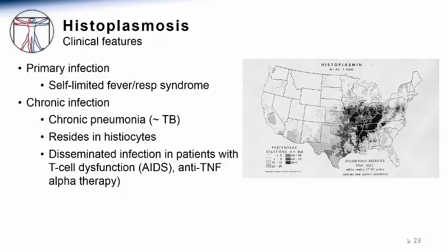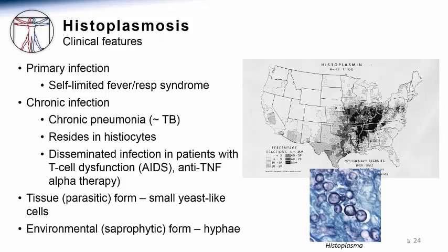Similar to tuberculosis, Histoplasma species live within macrophages and other histiocytes in the body where they can live for years without reactivation. However, once reactivated, they can cause disseminated infections, particularly in patients who have T-cell dysfunction such as those with late-stage AIDS. In recent years, disseminated histoplasmosis is often seen in patients treated with anti-tumor necrosis factor alpha therapy for autoimmune diseases. The tissue or parasitic form is a small individual budding yeast-like cell, as opposed to the grouped cells in the spherules of coccidioidomycosis, and this organism grows in the saprophytic form in hyphae.